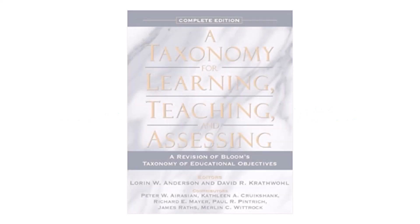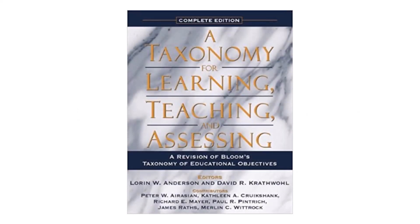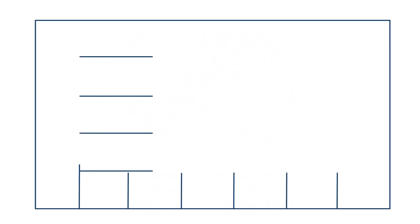In the revised version of the taxonomy, which is what we will refer to moving forward, the cognitive domain consists of two dimensions: the cognitive processing dimension and the knowledge dimension. Therefore, this taxonomy is represented as a grid, not a pyramid.